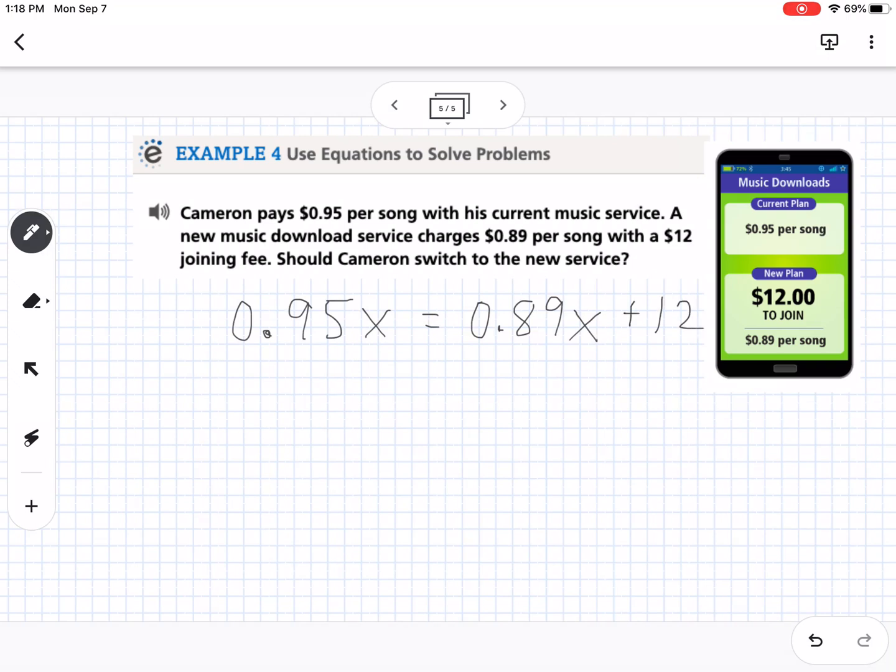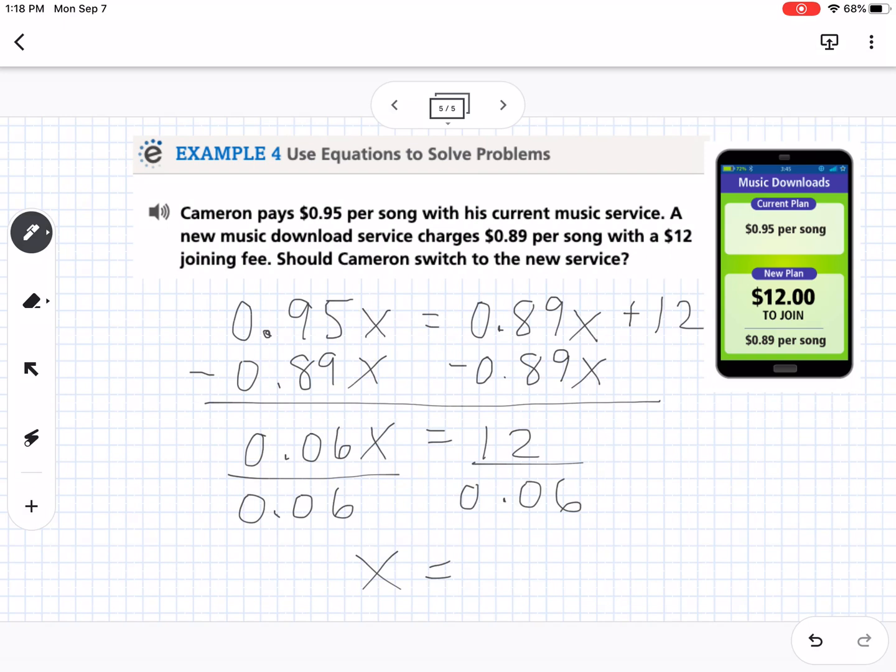So what we want to do is we want to figure out how many songs are going to make these two situations equal to each other. So I'm going to get the x's on the same side. So I'm going to subtract 0.89x from both sides. So that's going to give me 0.06x equals 12. And then we're going to divide by 0.06. So 12 divided by 0.06 gives me 200.